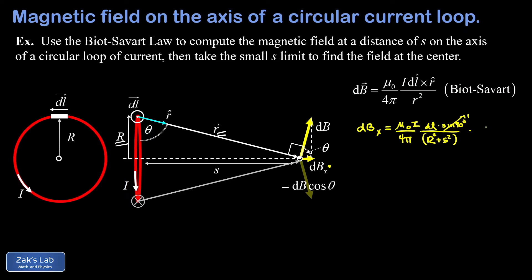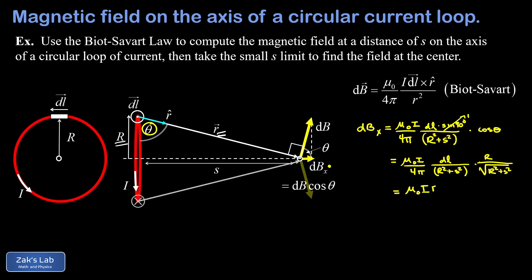Taking just the horizontal component, dbx equals db times cosine theta. Cosine theta is adjacent over hypotenuse, which is big R divided by the length of the position vector little r — and using the Pythagorean theorem, that's the square root of big R squared plus s squared. Everything is now constant except dl, so we factor out: mu-naught times I times big R over 4-pi times the quantity R squared plus s squared, raised to the three-halves power.